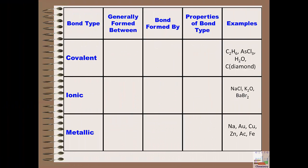When we take a look at the three types and compare them and summarize what we've seen here, we can compare them based on what kinds of elements they are generally formed between, what the electron behavior is when the bond is formed, and some of the general properties of these elements. And you can see some examples of each of these types of bonding as well.